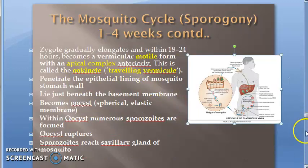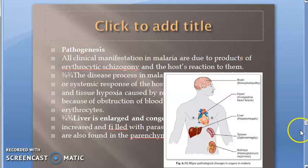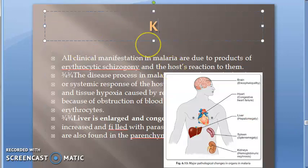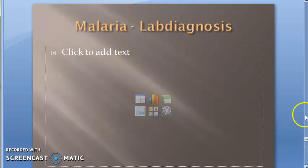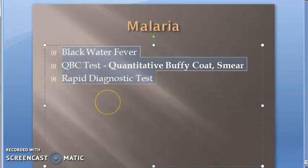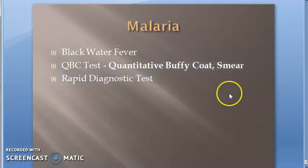That covers what happens in the mosquito. Still to cover: malaria pathogenesis and malaria lab diagnosis. We should also know specific terms like blackwater fever, QBC test, rapid diagnostic test, and others. See you in the next video.